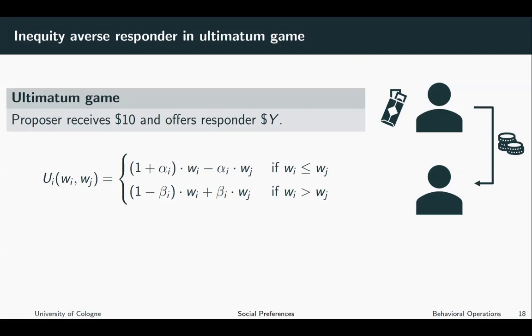As a refresher, I've written down the utility function for the two-player case. In the first line, we see the utility of player i in case player i is worse off than the other player. In the second line, we see the utility of player i when player i is better off than player j.